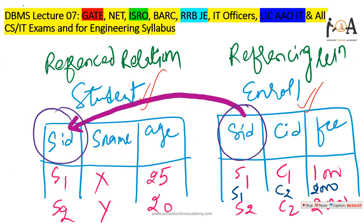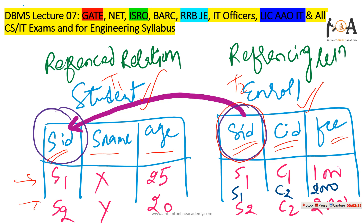Consider a student table with student ID, student name, and student age, and an enrolled table with student ID, course ID, and fee structure. Table one is the student table and table two is the enrolled table. The student ID in the enrolled table is the foreign key. It refers to the primary key of the student table, since student ID uniquely identifies each row there. For example, S1 references student X, age 25, with course C1 and fee 1000.